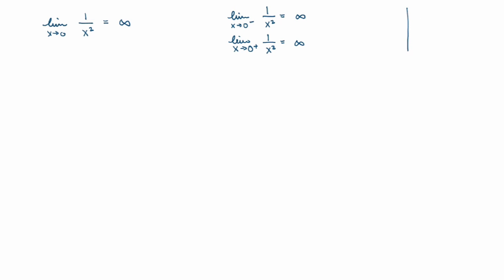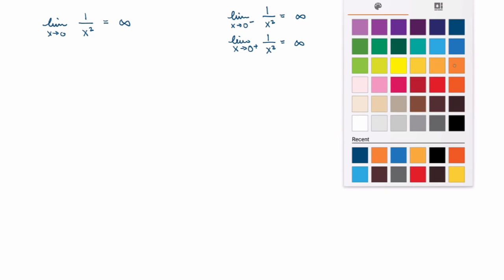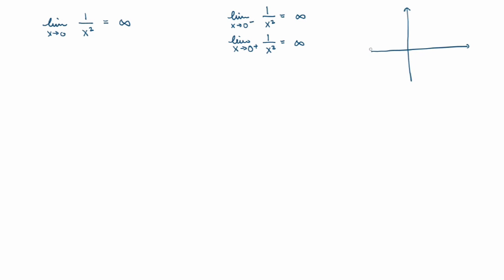We can check this by looking at the graph of the function. The graph of 1/x² looks like this — as x goes to 0 on either side, the function blows up to infinity. But that's not always the case, so let's look at an example where the one-sided limits are different.